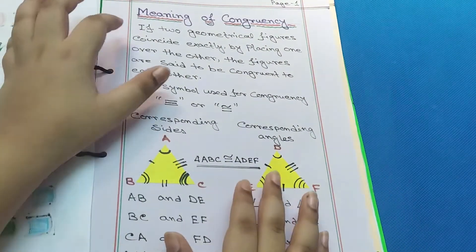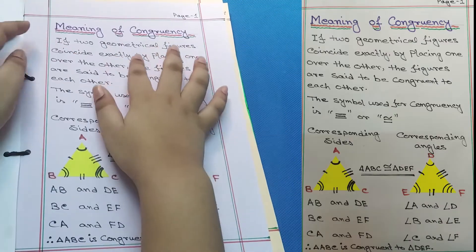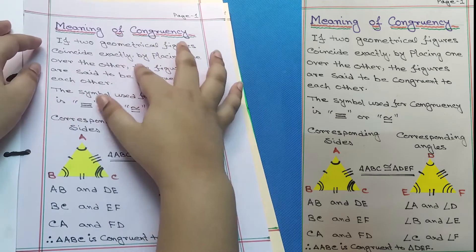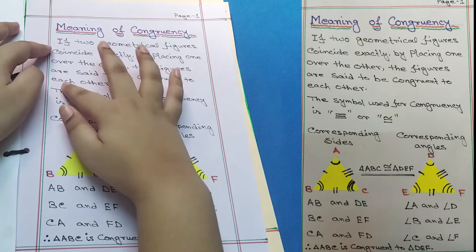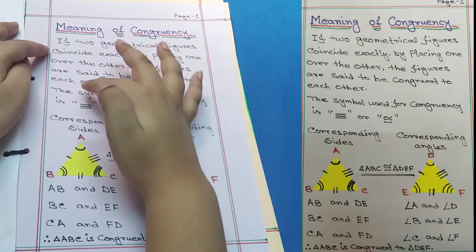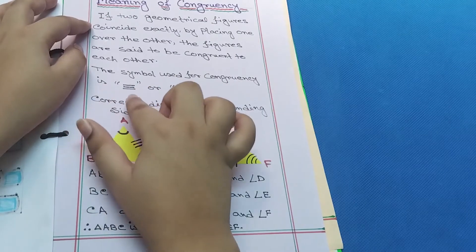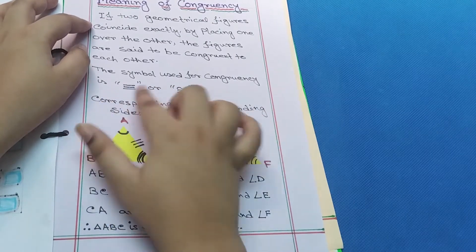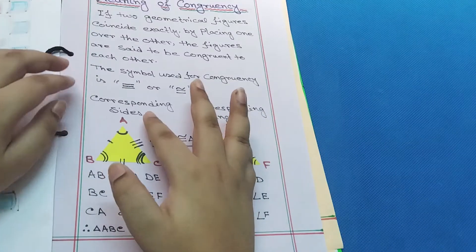Meaning of congruency: If two geometrical figures coincide exactly by placing one over the other, the figures are said to be congruent to each other. The symbol used for congruency is this. First, let's look at the corresponding sides.